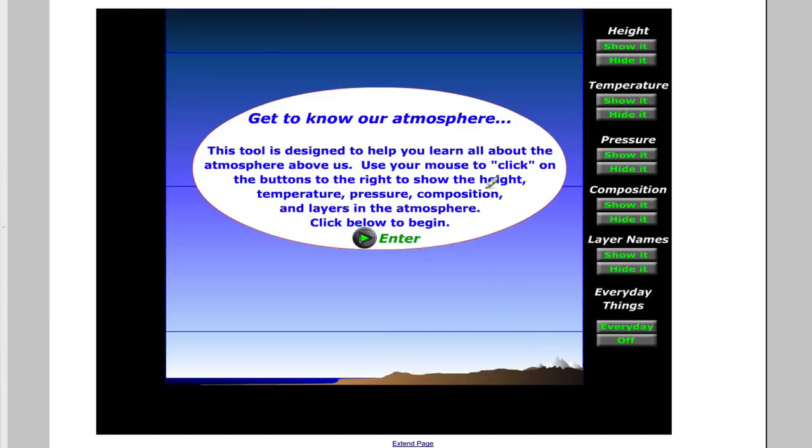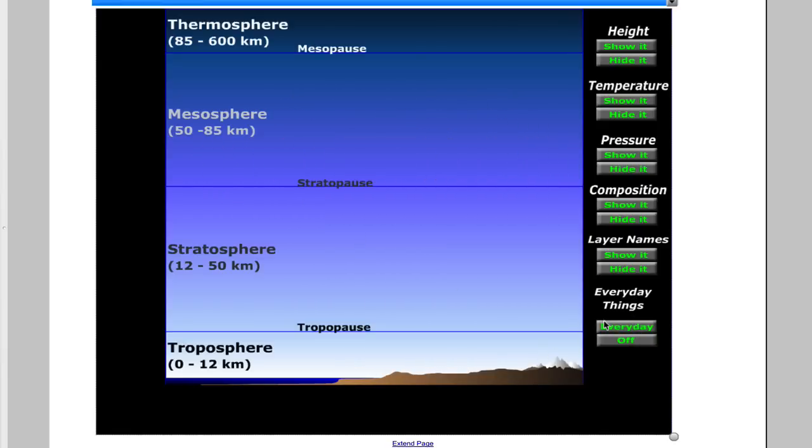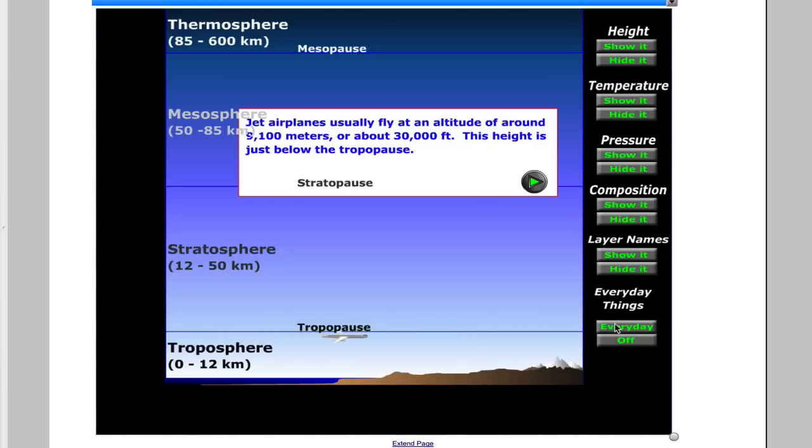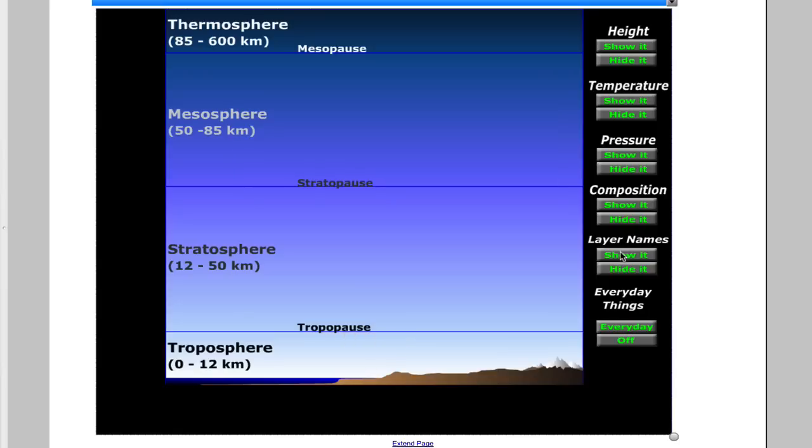Here's another way of looking at the earth's atmosphere. If we start this little animation game here, we can turn on and off several everyday items. We have where airplanes fly down here. You can turn on and off the layered names.